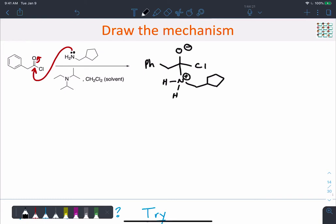Okay, so there's that first tetrahedral intermediate. That tetrahedral intermediate can collapse, expel that leaving group.